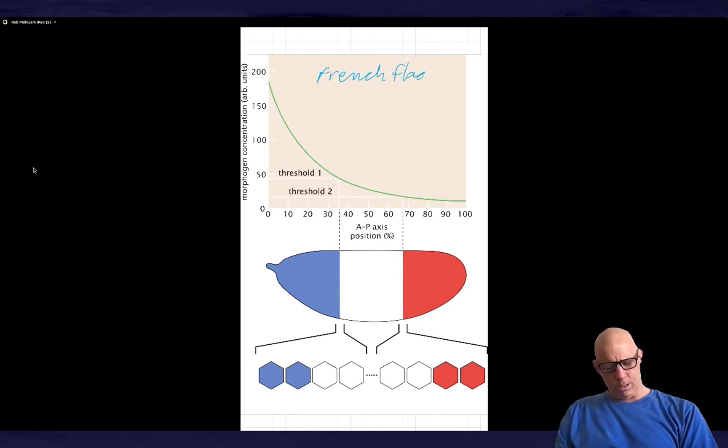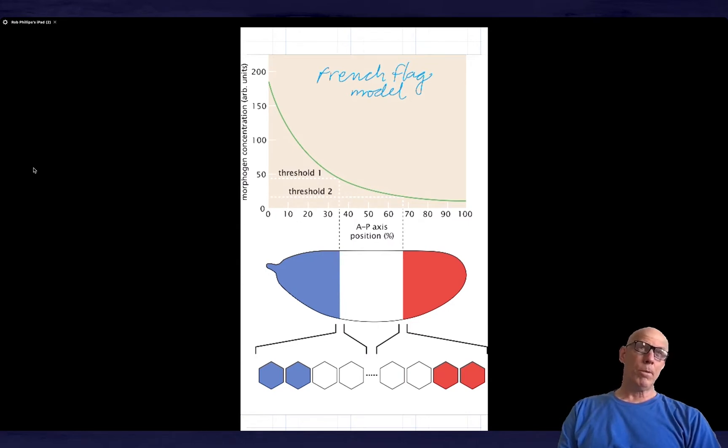As I told you several vignettes ago, when introducing the idea of positional information, this is something that's attributed to Lewis Wolpert. There is an article in this book on theoretical biology by Waddington where you can see what Wolpert had to say about it. But it's now canonized under this notion of the French flag model, and I want to say what that model is, and then we'll try to explore what its experimental implications are.